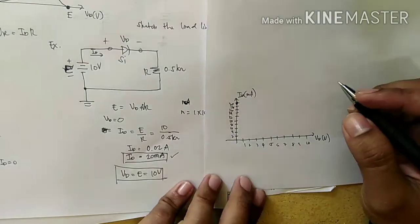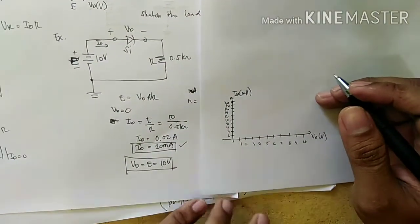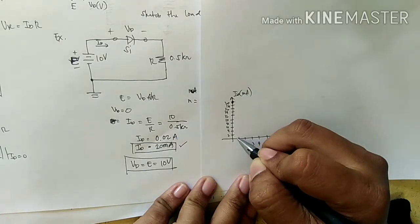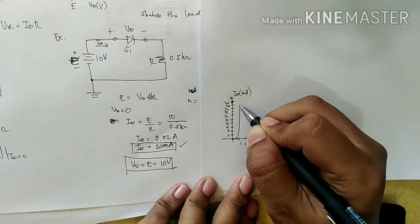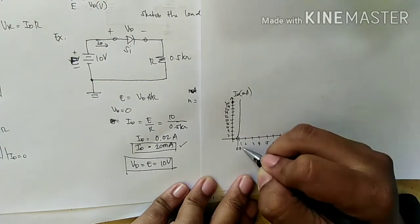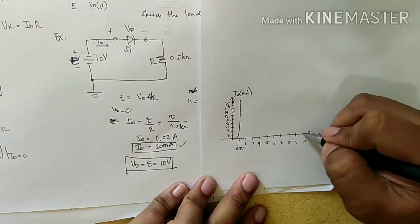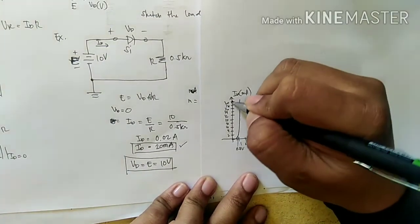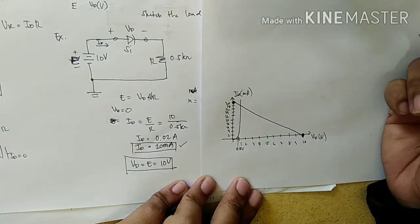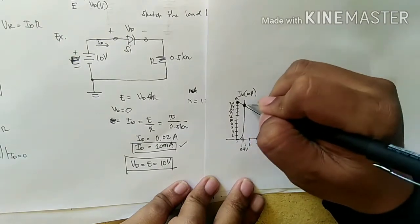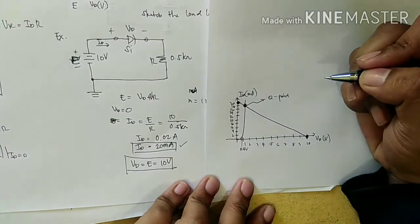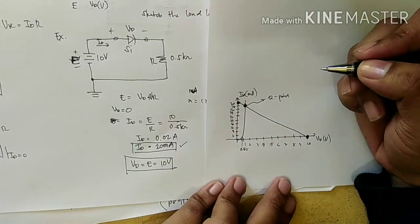Since this is silicon, the characteristic curve starts at 0.7 volts. This is E, this is the highest current, and then this is the load line and this is the Q point.